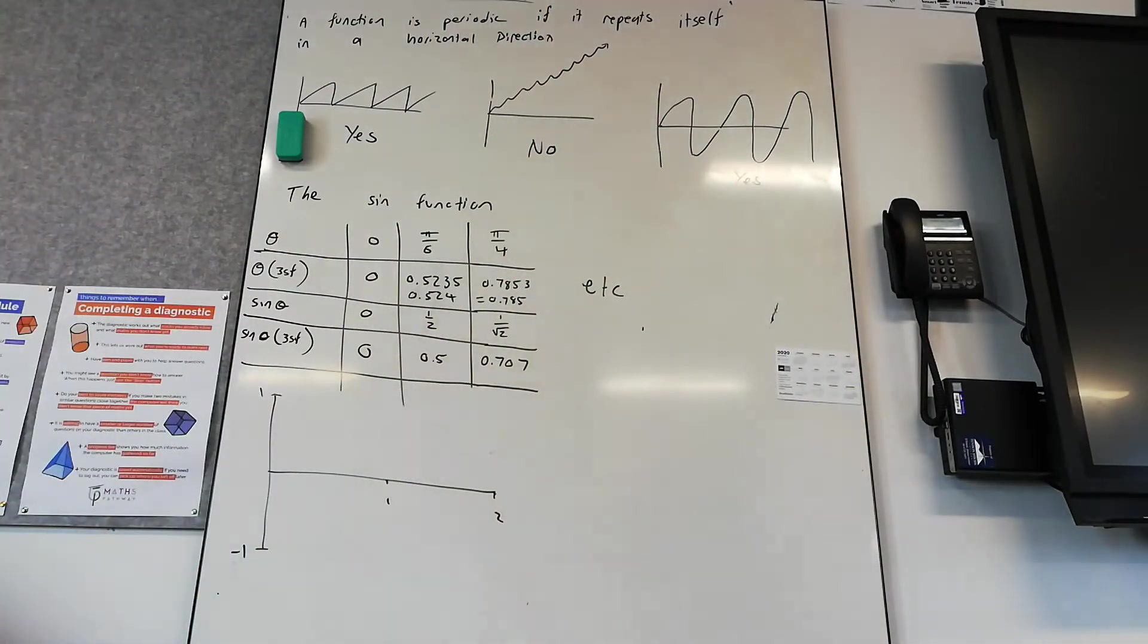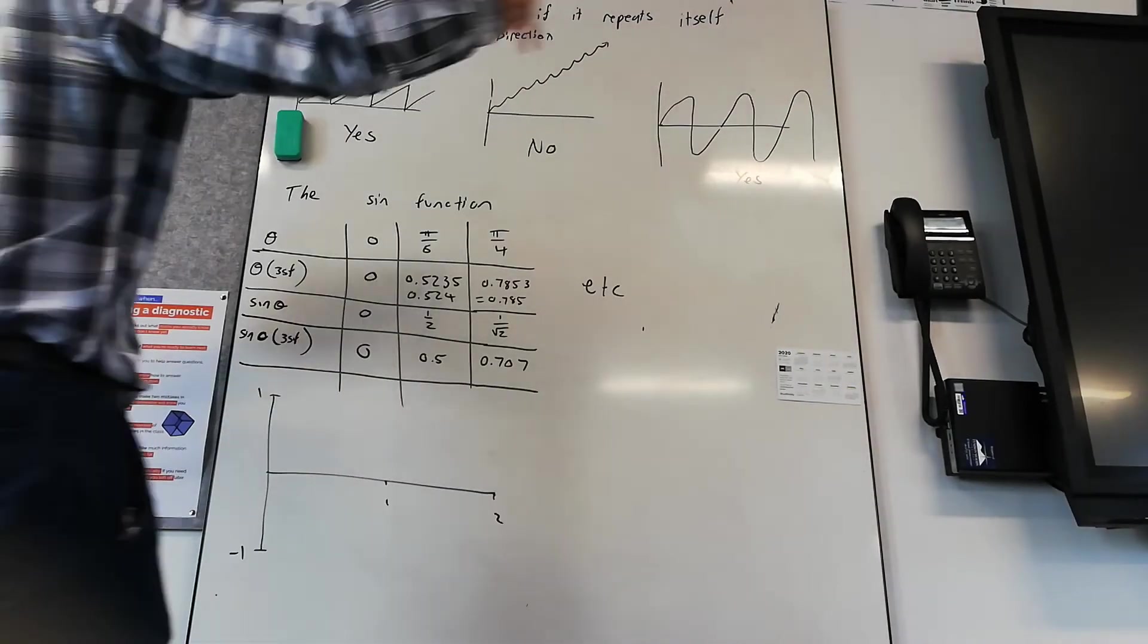That exercise 7A, you'll be able to look at it. I think you're just doing question one. You just look at it and you're saying is it periodic or not? Does it repeat itself in a horizontal direction?